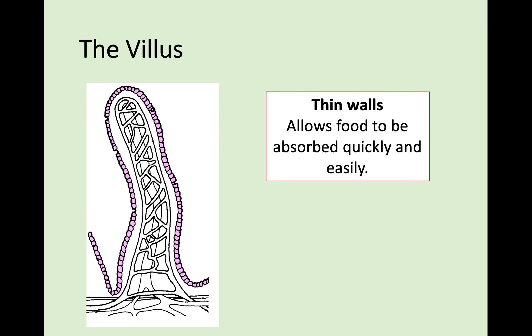There are three parts to the villus that make it very good at absorbing nutrients. First of all, it's exactly the same as alveoli — it has thin walls. The thin walls in the villus allow food to be absorbed quickly and easily. It's got a thin wall, so nutrients can just move through it. This is highlighted in the purple wall structure on the outside of the villus.